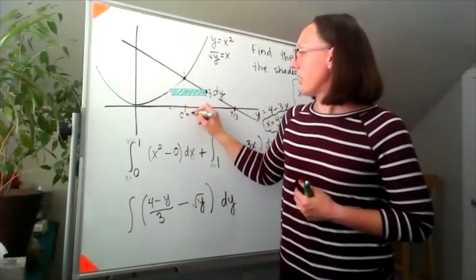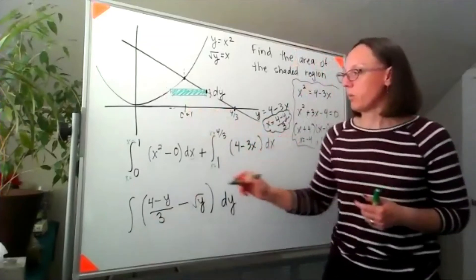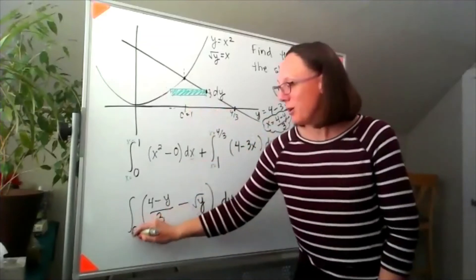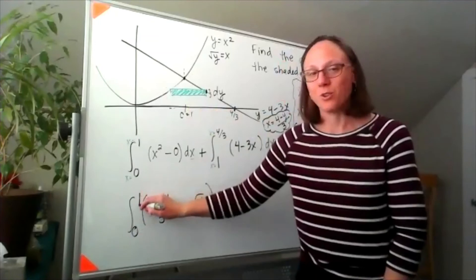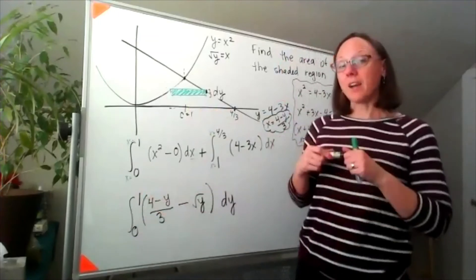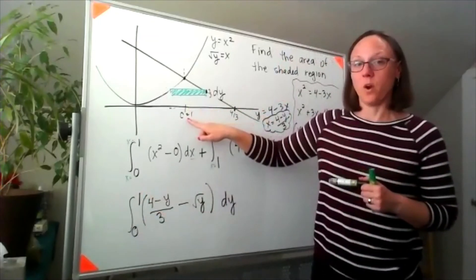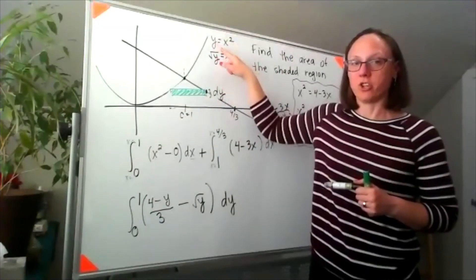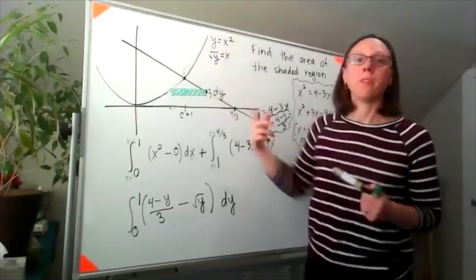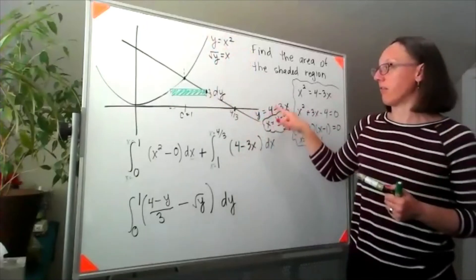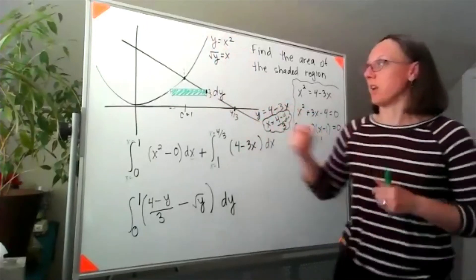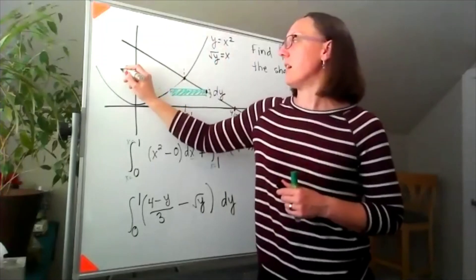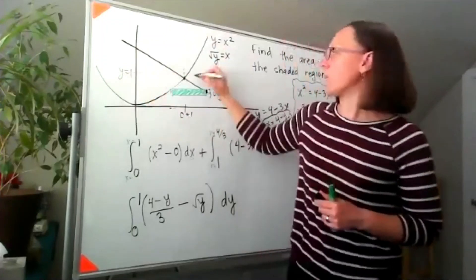well, unfortunately, I chose a problem where these y bounds are the same, but this is going y equals 0 to y equals 1, because we found this intersection point at x equals 1, and if we plug 1 into our original function, 1 squared is still 1, or if we plugged it in over here, 4 minus 3 is also 1. So this happens to be at a height of y equals 1.